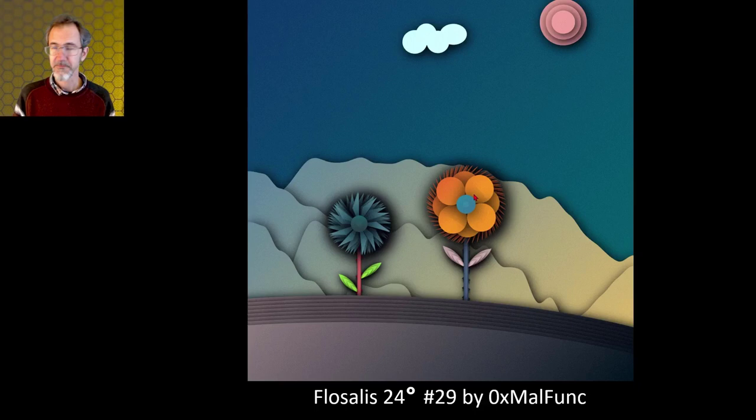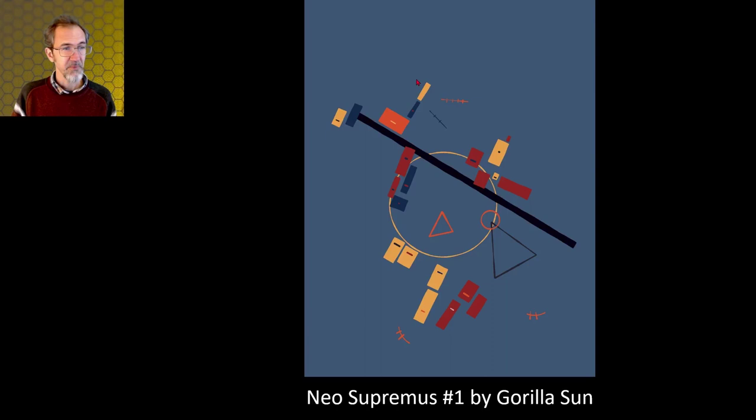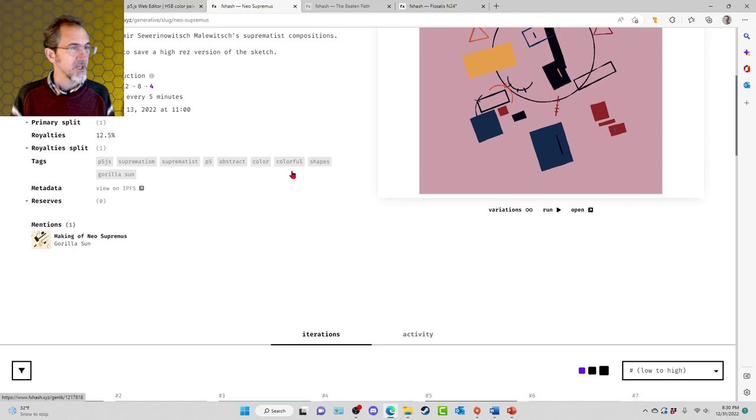Here's Neo Supremus number one by Gorilla Sun. This one also has positive and negative space. There is a main object and I would say that this black mark is the secondary object. These rectangular objects around here could be considered a motif. It's a repeating pattern. That's another technique that artists use. Sometimes it's called rhythm. This being placed in a diagonal kind of creates a little excitement. There's something about diagonals that are more exciting than horizontal and vertical lines.